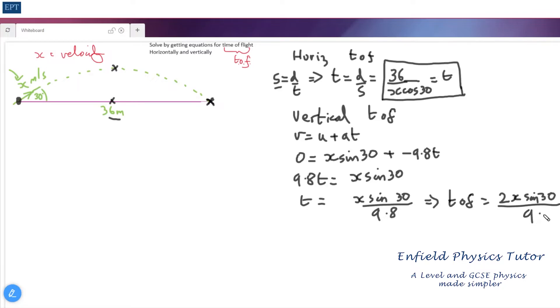And that's our second expression and the two t's in the two boxes there are equal. So let's change the pen color and we'll set them equal to each other. So that means that 36 over x cos(30) is equal to 2x sin(30) over 9.8, and now it's just a question of rearranging, getting a formula for x.